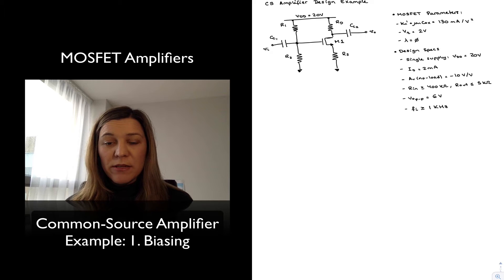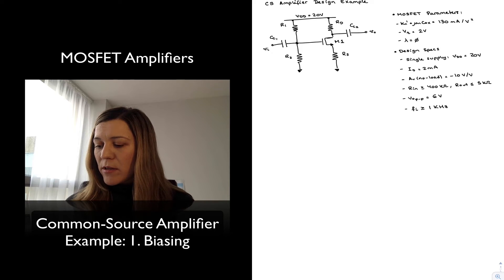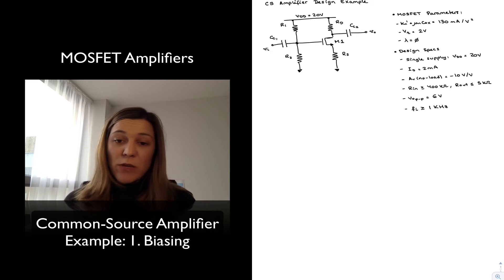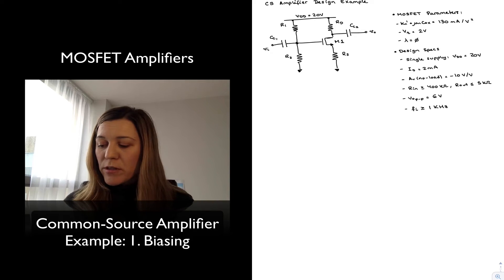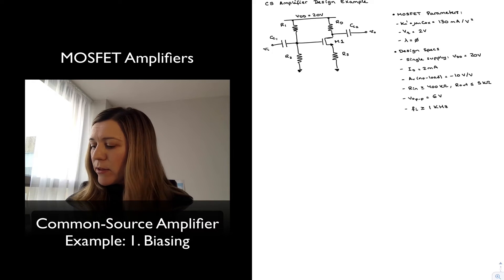That's why I'm coupling my signal through a coupling capacitor so that the DC point won't be altered. I'm assuming that I want my output signal without any DC component, so I'm running it through a coupling capacitor at the output to filter out any DC components.